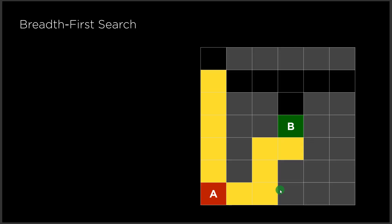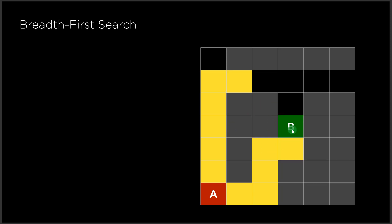Here you can see we have already reached our required goal state. We explore this particular node, then this node, and again this element. So simultaneously we are following both paths and trying to see whether it is our goal state or not, based on the first-in-first-out principle. Because we started from this particular direction, this will come first in the queue, and after that this element will come. In this way we are reaching to this particular goal state.